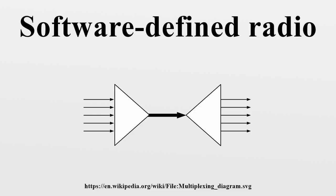Most receivers use a variable frequency oscillator, mixer, and filter to tune the desired signal to a common intermediate frequency or baseband, where it is then sampled by the analog-to-digital converter.